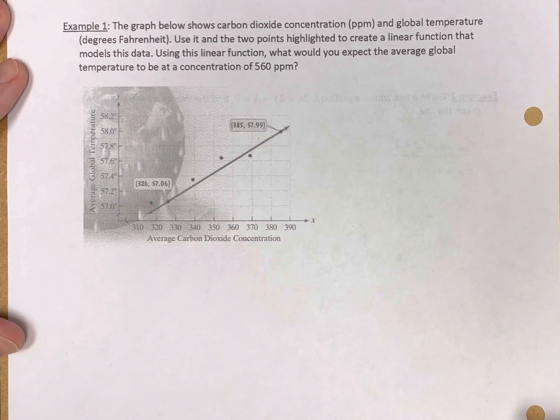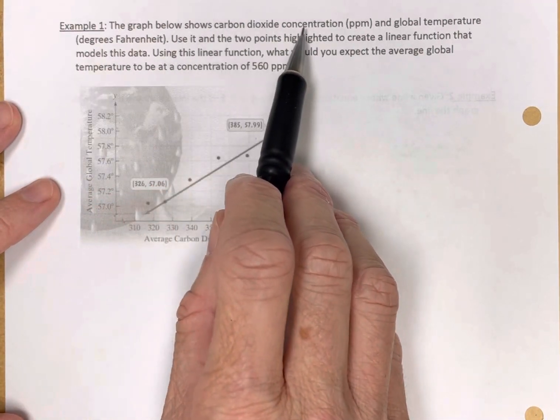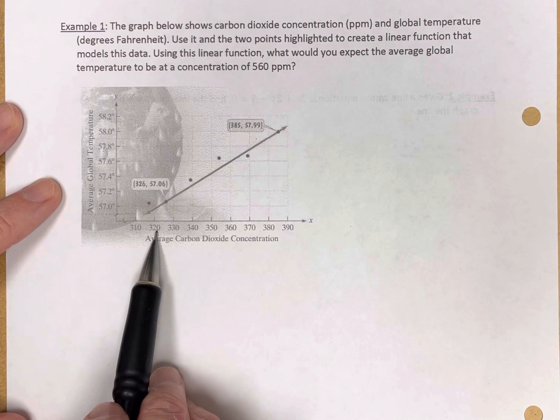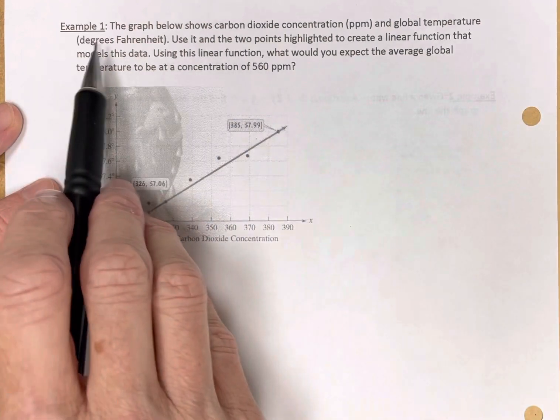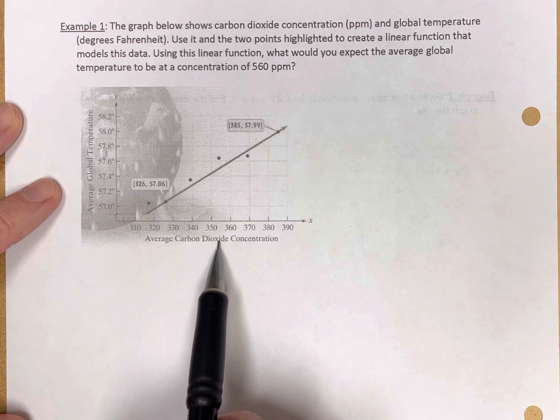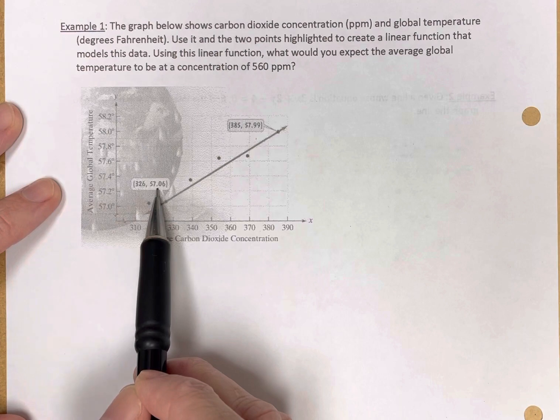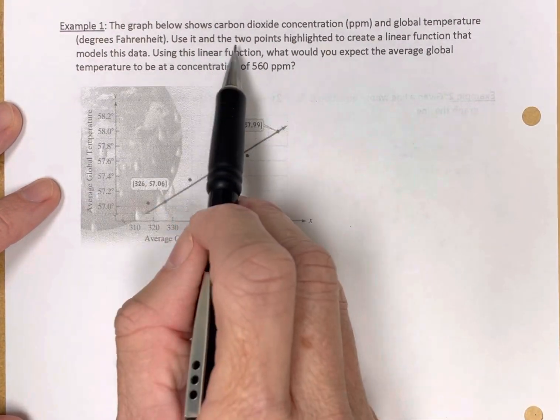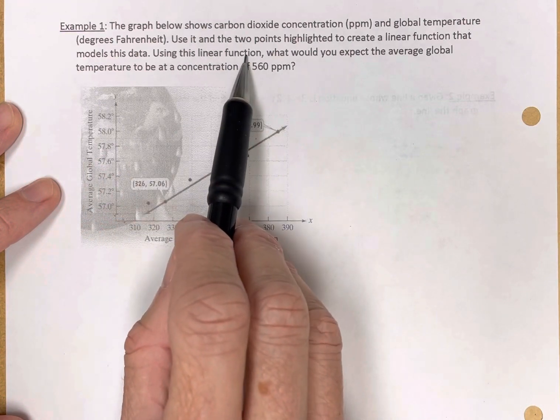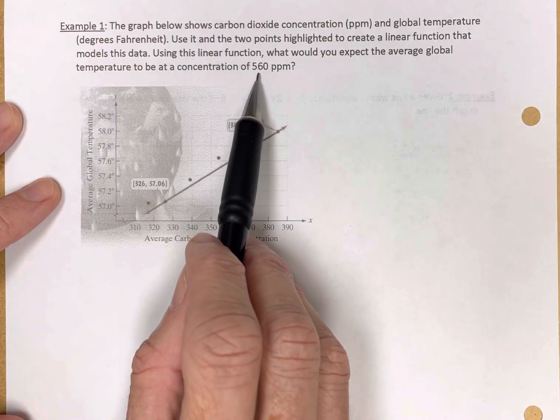I'll have to slide it up but I'll kind of go back and forth to help us out. So example one, here is some data. The graph below shows carbon dioxide concentration in parts per million, right here on the x-axis, 310 parts per million, 320 parts per million, etc. And the associated global temperature in degrees Fahrenheit. So as you can see here with this point, when the average carbon dioxide concentration is 326 parts per million, the global temperature is 57.06 degrees. Use the graph and the two points highlighted to create a linear function that models this data. Using this linear function, what would you expect the average global temperature to be at a concentration of 560 parts per million?